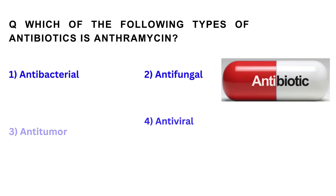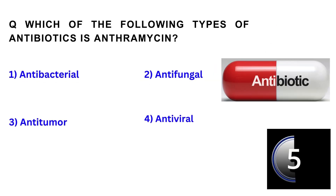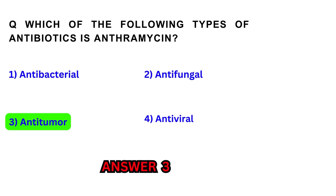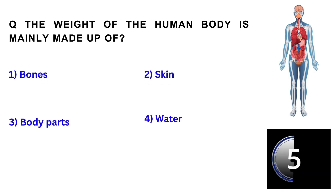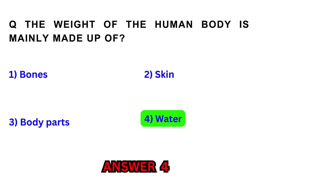Which of the following types of antibiotics is anthromycin? Anti-tumor. The weight of the human body is mainly made up of? Water.